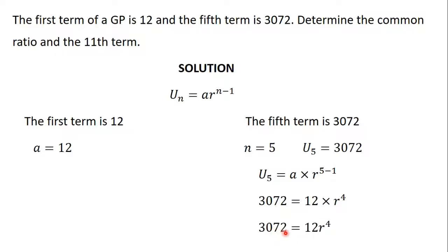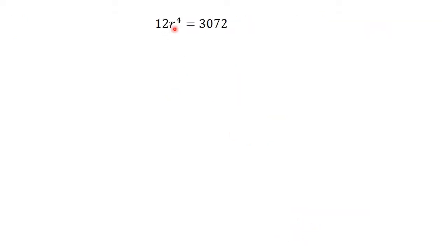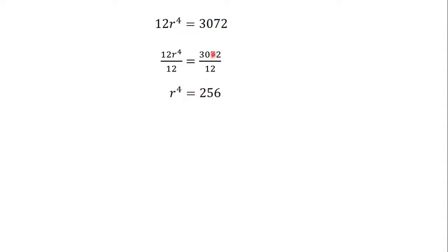This gives us 3072 is equal to 12·r⁴. So, 12·r⁴ is equal to 3072. We divide both sides by 12, and that gives us r⁴ is equal to 3072 divided by 12, which is 256. So, r⁴ is equal to 256.